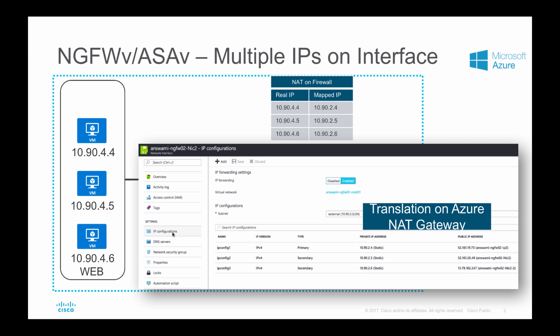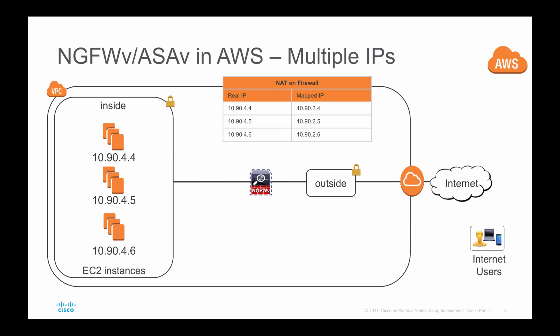You don't have to worry about that part. Once you have your secondary IP addresses assigned, you can go back to your firewall — it can be a next-generation firewall or ASA. You just need to enable your translation and allow traffic in the access control policy. The same applies to the AWS environment as well.